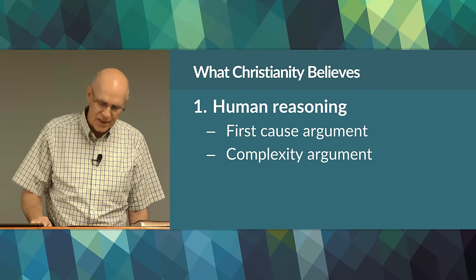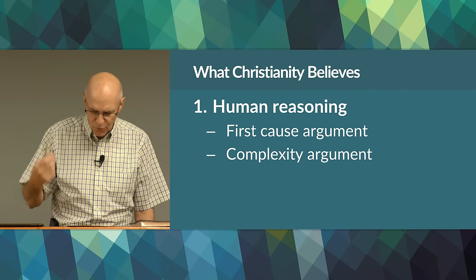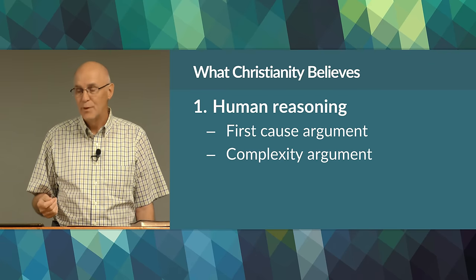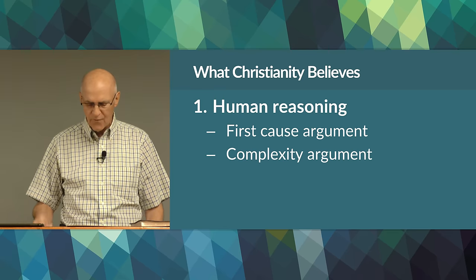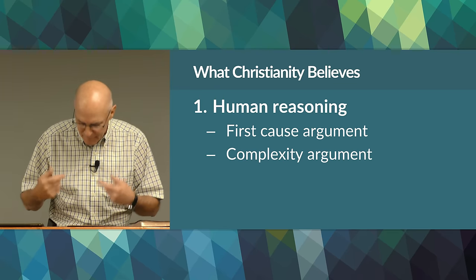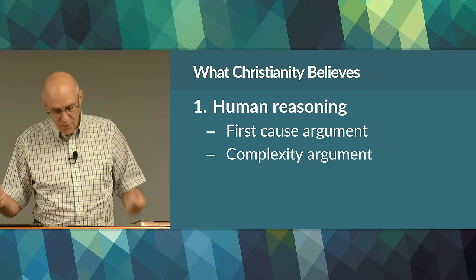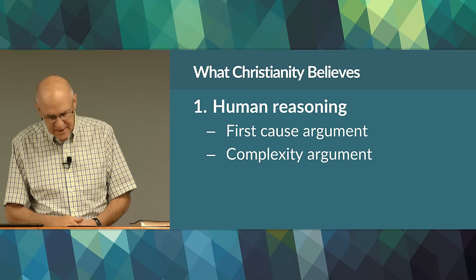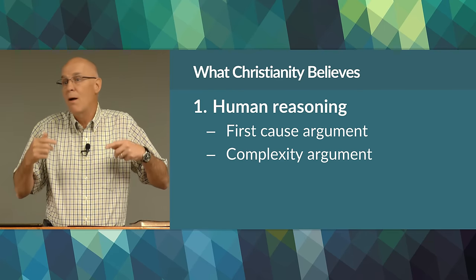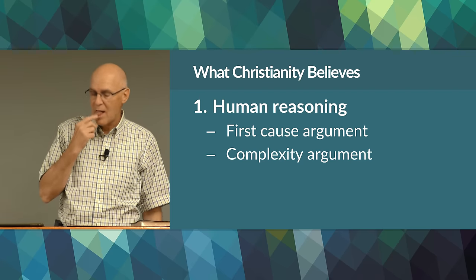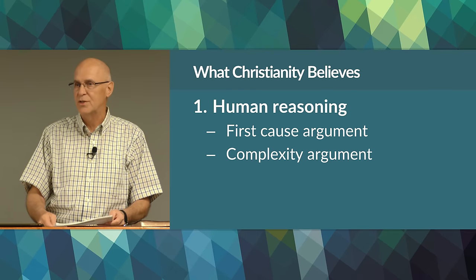Another argument from human reasoning is called the complexity argument. This reasoning says that only a complex mind could have conceived and created a complex world. Since complex, living, animate beings cannot naturally come from simple, non-living, inanimate matter — a bird cannot evolve from a stone — the world of matter and animated beings must have been conceived and created by a being more complex than his creation. That being, more complex than his creation, we call God. For example, a person creates a computer; a computer doesn't build a person.